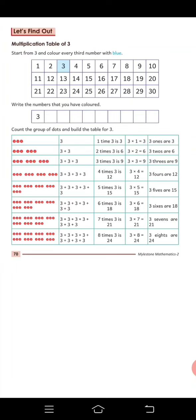Multiplication table of 3. What do you want to do? 3 plus 3 and color whatever you want to do. Write the numbers that you have colored in the box. Count the group of dots and build the table for 3.